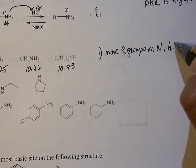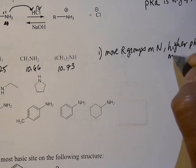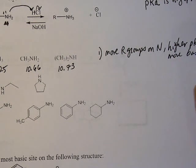So the trend that you see in general is that the more R groups on nitrogen, the higher the pKa, or we could say more basic.